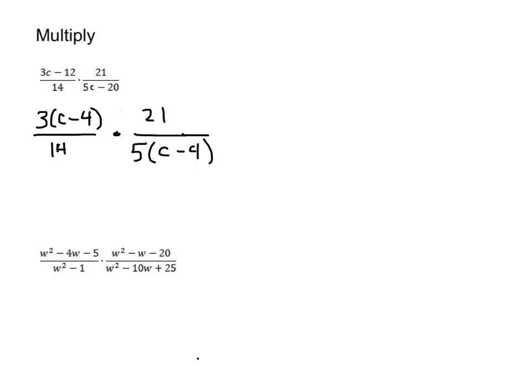Now take a look right here — we have a C minus 4 over here and a C minus 4 over here. So we can cancel out those factors of C minus 4, and what we're going to have left is on the top we have 3 times 21, and on the bottom we have 14 times 5.